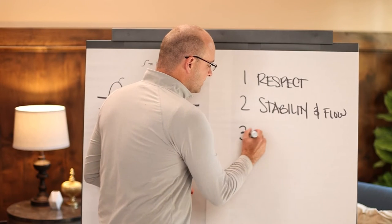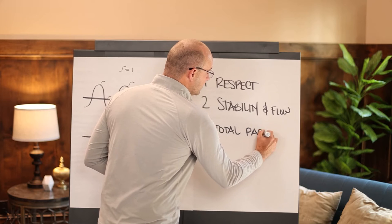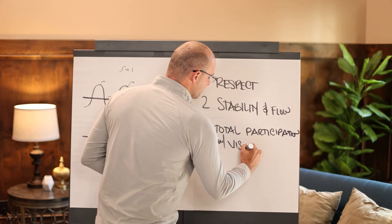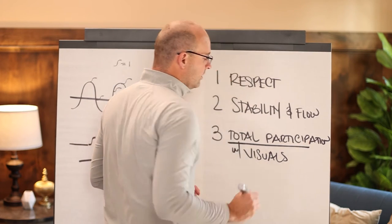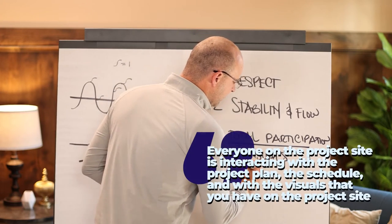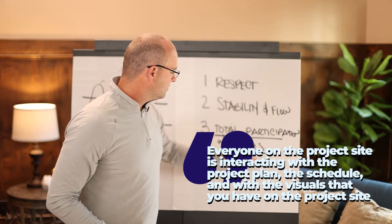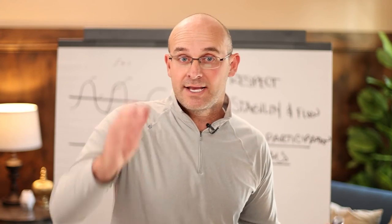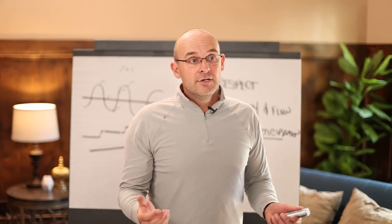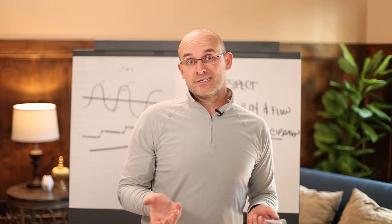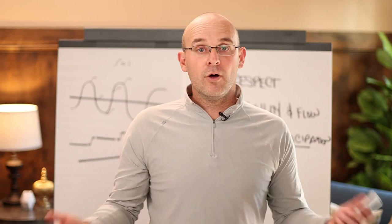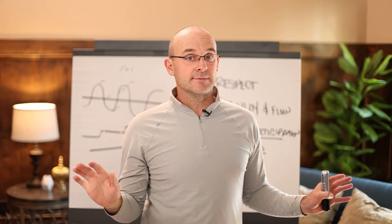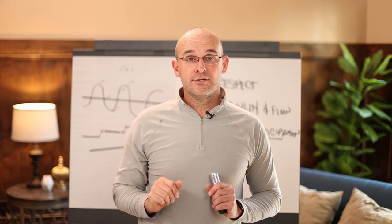Number three: total participation with visual systems. What this means is that everybody on your project site — not just a few people — but everyone is interacting with the project plan, the schedule, and the visuals you have on the project site. I don't really care if only two to twelve people are participating with the system. I want all foremen, all crew leaders, all workers participating so that you see as a group, know as a group, and act as a group — meaning everyone's following the systems. Only then can you focus on continuous improvement and quality.